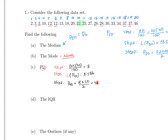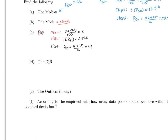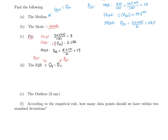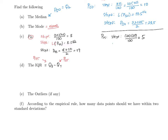To find the IQR, by definition it equals Q3 minus Q1. But Q3 is P75 and Q1 is P25, so we need to find both. For P25: step one is 20 times 25 over 100, which equals 5 — a whole number.